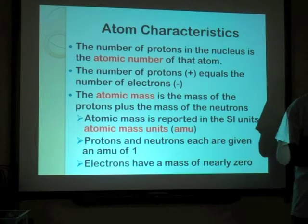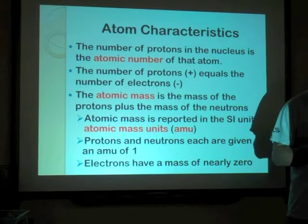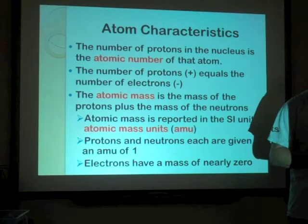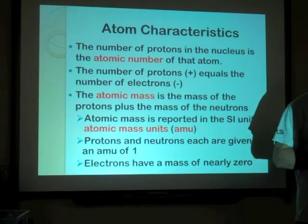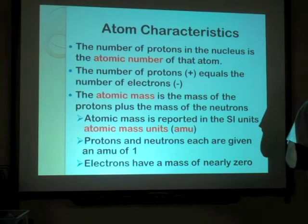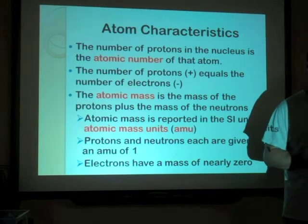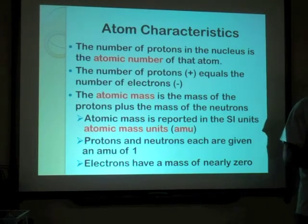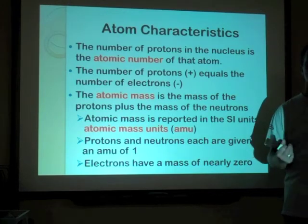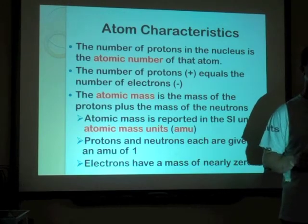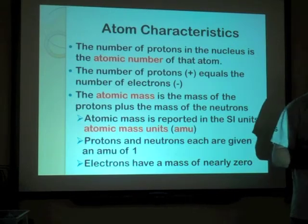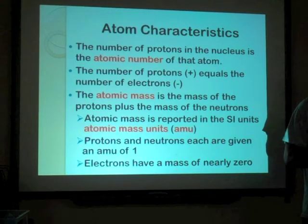Here are some characteristics of atoms. The number of protons in the nucleus is the atomic number of that atom — that's going to become really important when we look at the periodic table. The number of protons — positive — equals the number of electrons. If we have 20 protons in the nucleus, we're going to have 20 electrons sitting outside the nucleus.